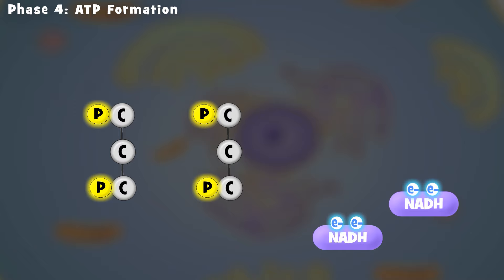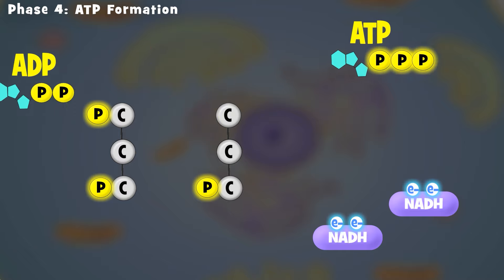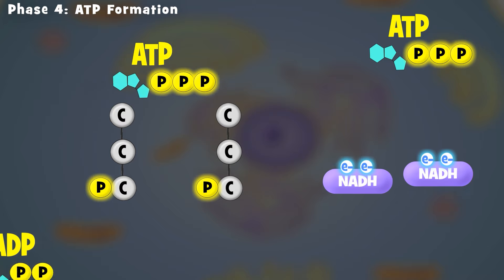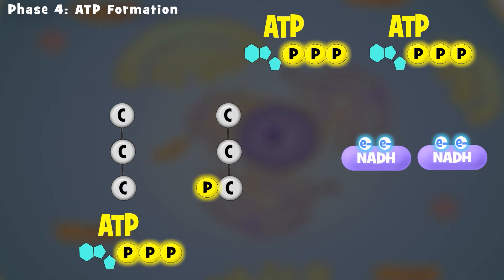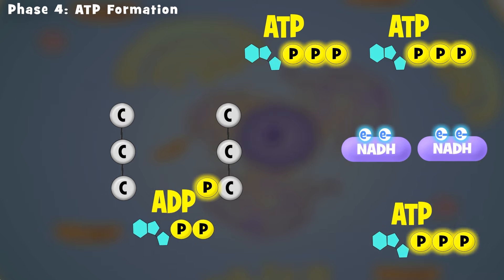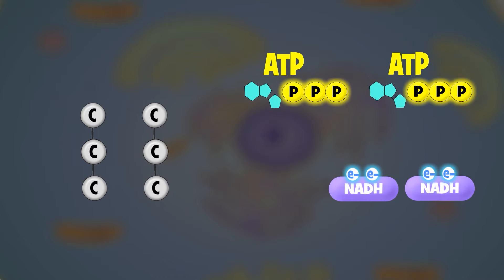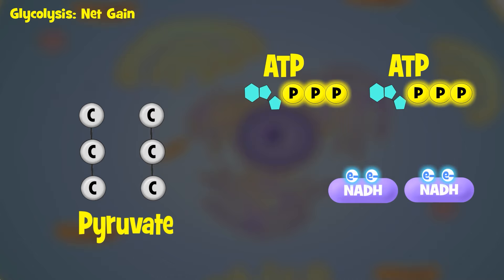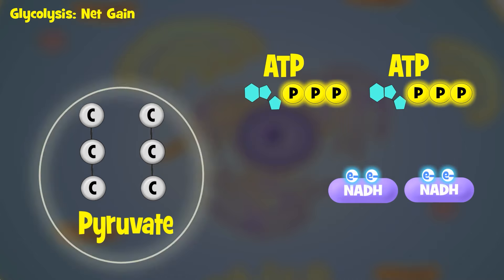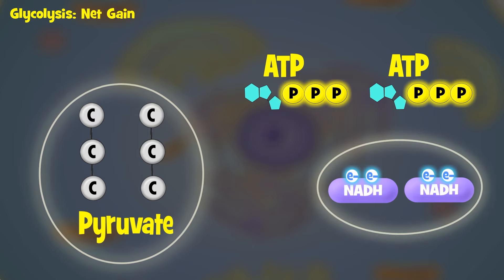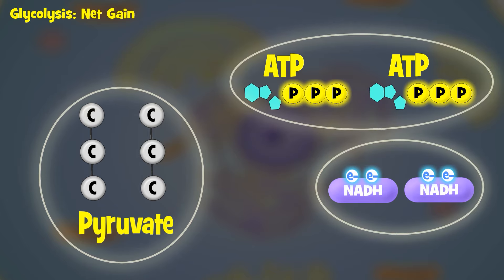Phase 4: ATP Formation. During this phase, phosphates get transferred from our sugars to ADP, making ATP. This makes two molecules of pyruvate and four molecules of ATP. However, because we invested two molecules of ATP at the beginning of glycolysis, our net gain was only two molecules of ATP. Our net products of glycolysis are therefore two pyruvates, two NADH, and two ATP.